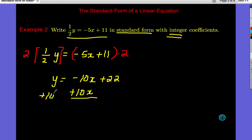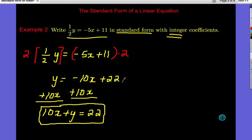So I'm going to just add the 10X to both sides. You can't combine 10X and Y, they're not like terms, so I get 10X plus Y equals 22. And so that is Standard Form of this line, one-half Y equals negative 5X plus 11. And notice how you can go from Slope-Intercept Form to Standard Form.